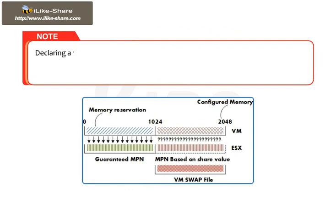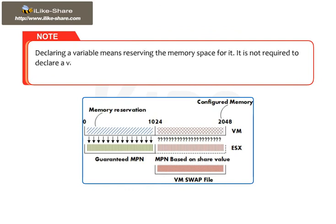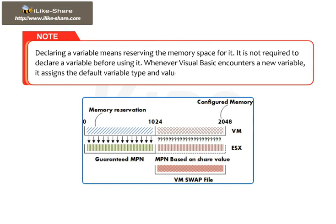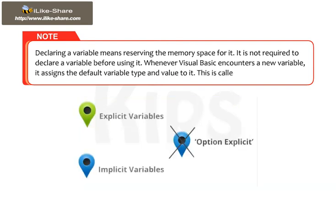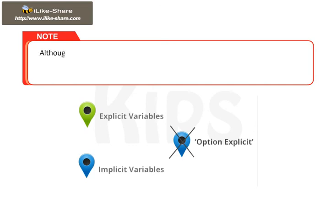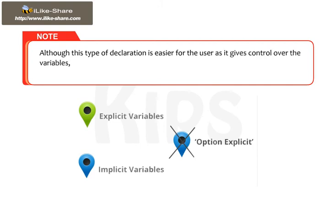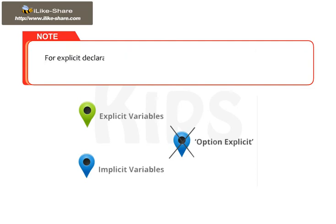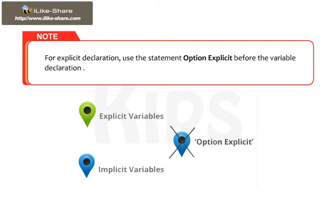Note: Declaring a variable means reserving the memory space for it. It is not required to declare a variable before using it. Whenever Visual Basic encounters a new variable, it assigns the default variable type and value to it — this is called implicit declaration. Although implicit declaration is easier for the user, it is advisable to declare variables explicitly, which is called explicit declaration. For explicit declaration, use the statement Option Explicit before the variable declaration.